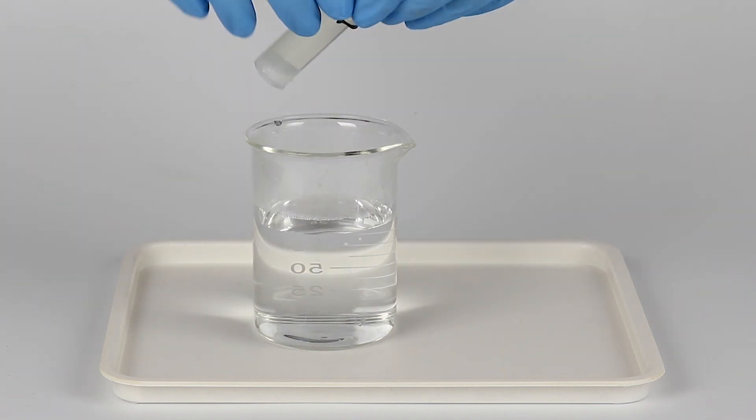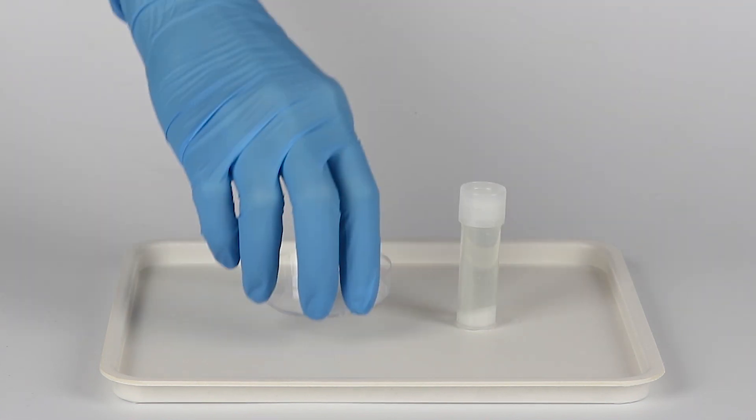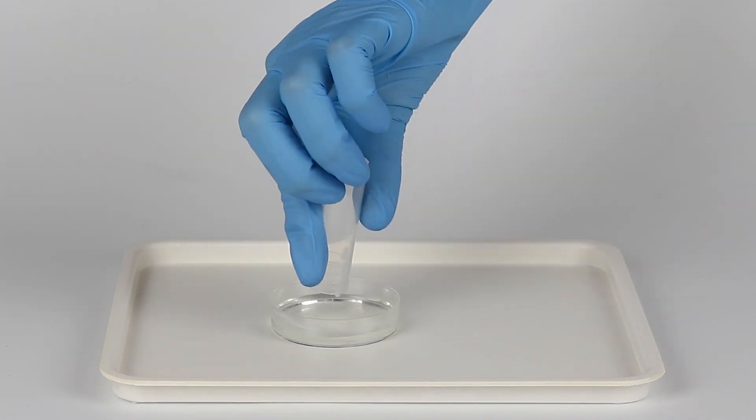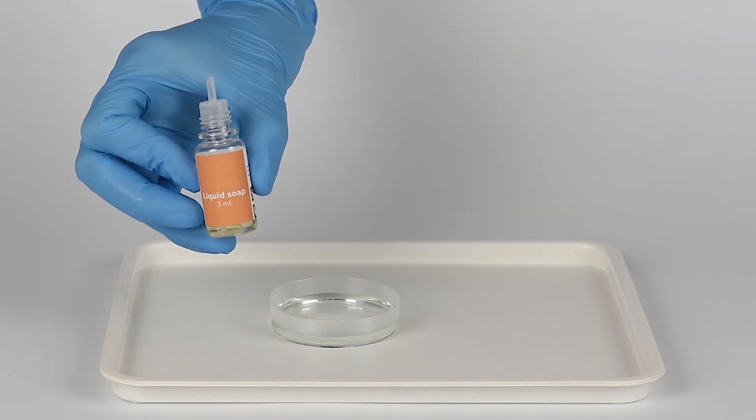Take the vial out of the beaker and remove the holder. Then pour the contents of the vial into the petri dish. Add one drop of liquid soap.